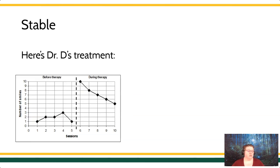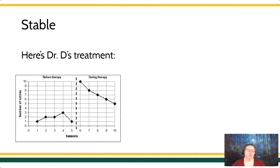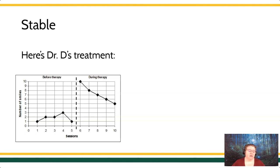So let's look at another doctor. Here's Dr. D. Same setup — the y-axis is number of smiles, x-axis is number of sessions. In the baseline condition: one smile, two smiles, two smiles, three smiles, and one smile. And then in the treatment condition, we pop all the way up to 10 smiles, which is amazing. And then eight smiles, and seven, and six, and five.